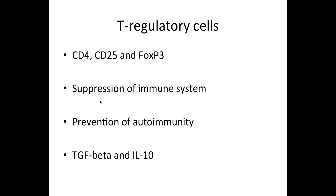So what's so special about T-regulatory cells? We'll find three surface molecules there: CD4, CD25, and FOXP3. CD4 is usually found on T-helper cells, but there has been much evidence that it has also been found on T-regulatory cells. CD25 is essentially a component of the interleukin-2 receptor — just a part of it — which is needed for proliferation of cells.